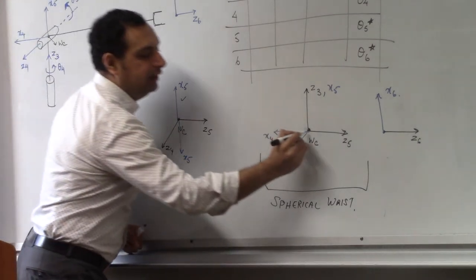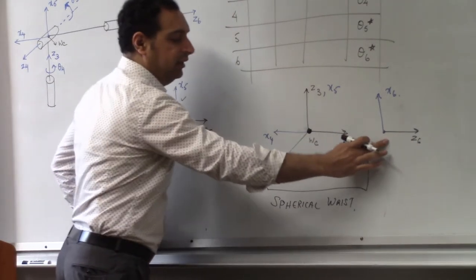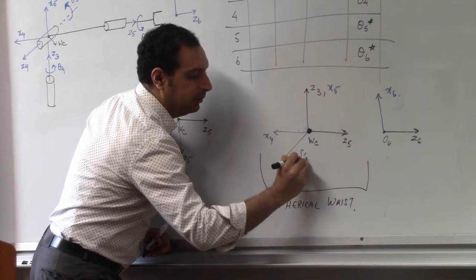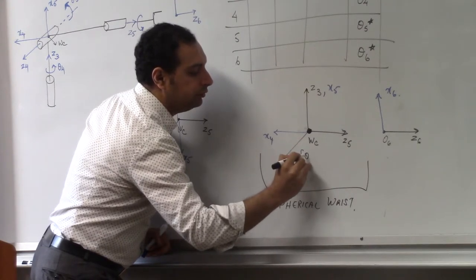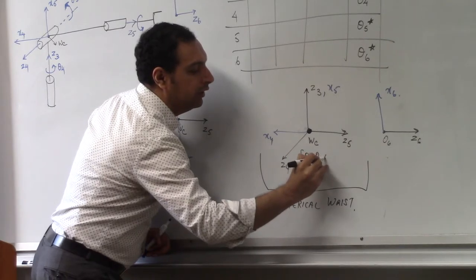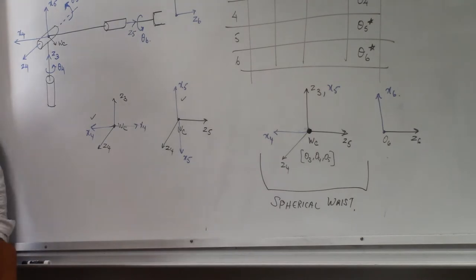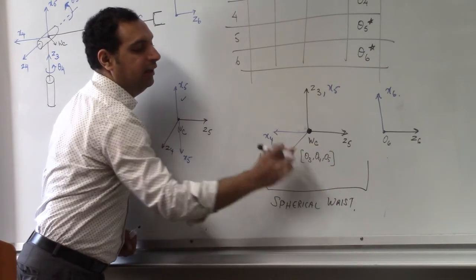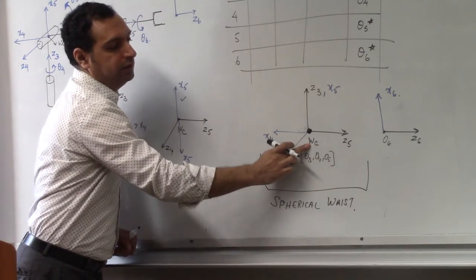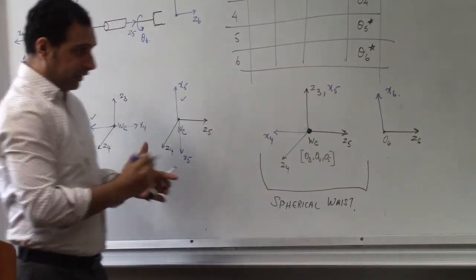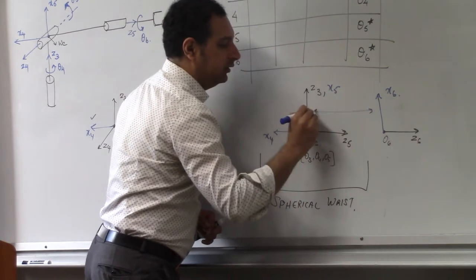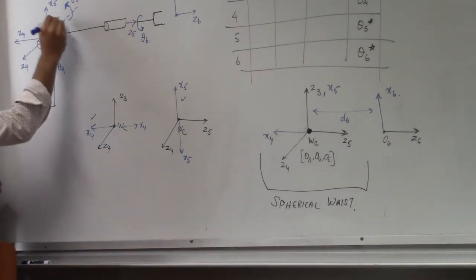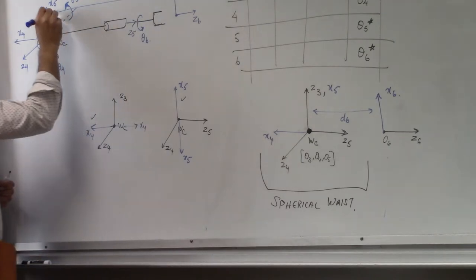This is your spherical wrist — all three axes intersecting at one common point, the wrist center. This is the end effector frame O6, x6. The wrist center WC is O3, O4, and O5 — all three origins are here. Each frame corresponds to one z-axis: z3, z4, and z5. These three are intersecting at one point, WC. This is your end effector frame, and this distance from the wrist center to the end effector frame you can call d6.